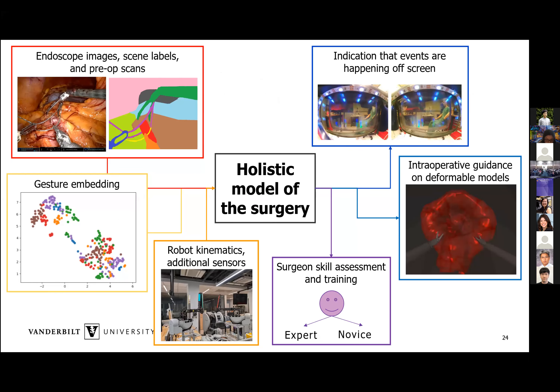The aspiration for the next few decades is to build a holistic model of surgery where we can take endoscope images, pre-process them to extract scene information through image segmentation, and add pre-op scans to understand it better. We also have a gesture embedding to understand what the surgeon is doing and what phase of surgery they're in, plus robot kinematics and additional sensors to make our picture richer. From that model we can then provide guidance on what skill level the surgeon is at, whether there's anything the surgeon should be paying attention to, and also provide a model for them to refer to throughout surgery. That brings me to the end of my talk.